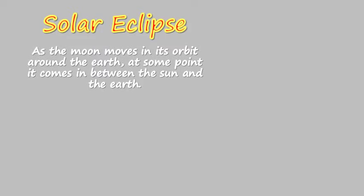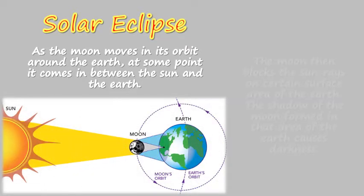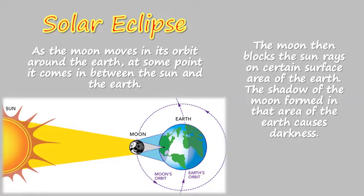Solar Eclipse. As the moon moves in its orbit around the earth, at some point it comes in between the sun and the earth. The moon then blocks the sun rays on certain surface area of the earth. The shadow of the moon formed in that area of the earth causes darkness. This is Solar Eclipse.